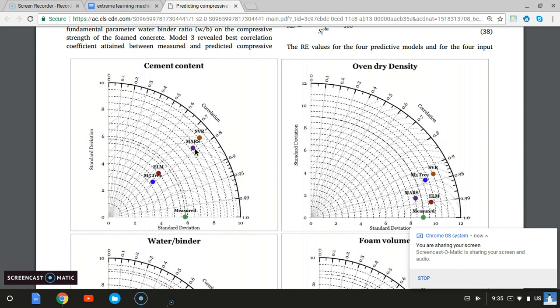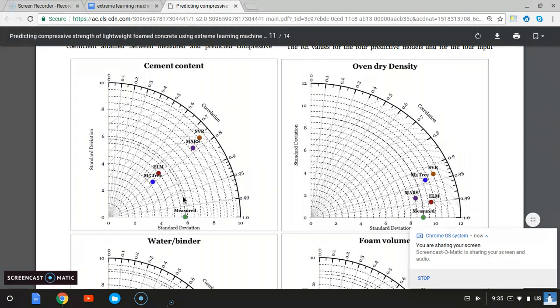You have all these models compared to the measured. Measured clearly has the correlation coefficient of 1, so it lies on this line of 1, and this is the line 0 correlation coefficient.